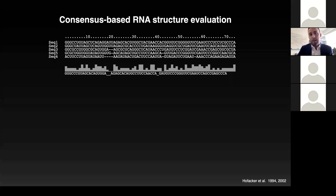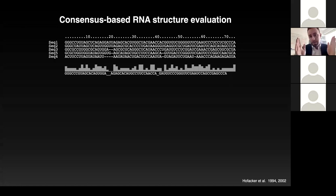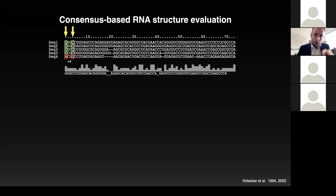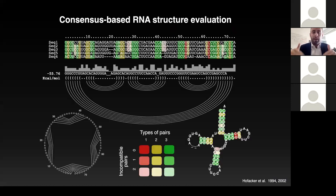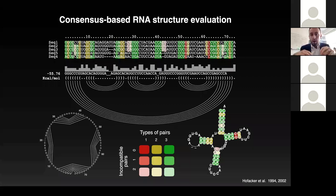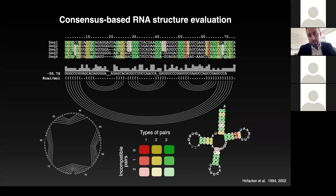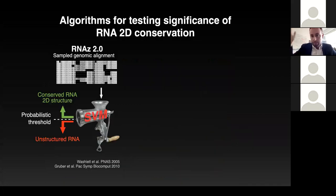I investigated this by looking at sequence conservation in multiple genome alignments between a dozen or so mammals. In regions that function through their structures, mutations aren't random — they are compensatory, mutating to preserve higher-order structure. For instance, an A would pair with U in RNA, but that A could mutate to G, which also pairs with U — and vice versa, the U could mutate to C. This covariation of mutations is measurable, and it serves as evolutionary evidence for conservation of structure.